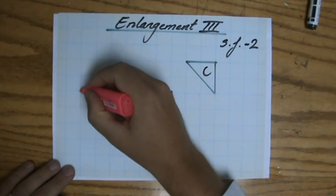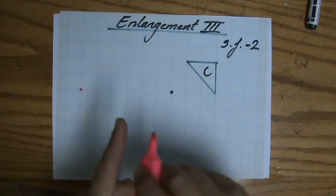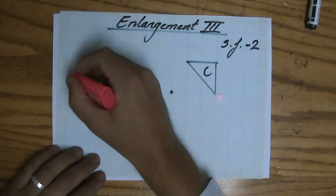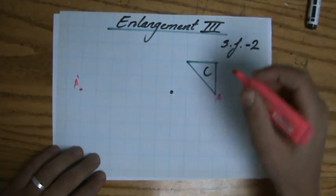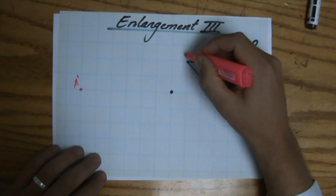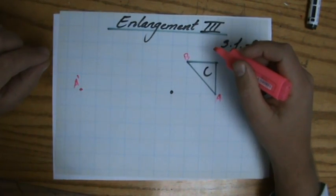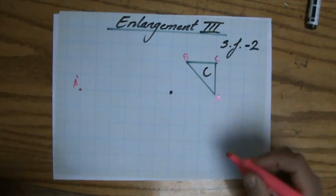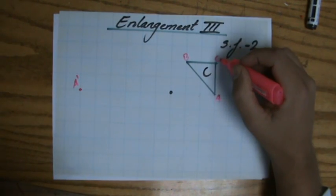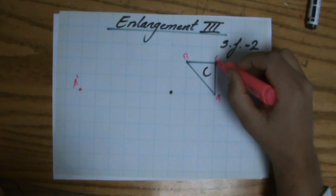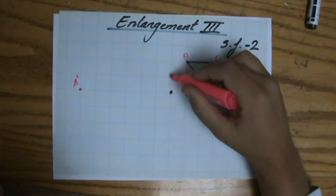So if that was point A, that will be A prime. Let's do the same here for point B. Actually, let me do C first. I think that's going to be easier. It is 1, 2, 3, 1, 2.